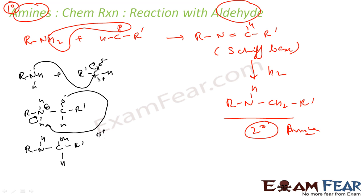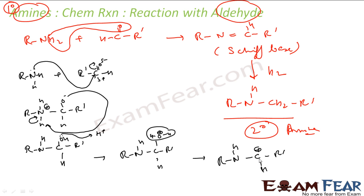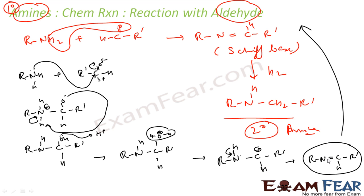The H+ will come and attack the oxygen, giving C-OH with R'. Again there will be H+ that attacks this oxygen and it becomes H3O+, which is too heavy, so this H2O will go off. Carbon gets a positive charge; since hydrogen leaving would give carbon only two bonds, instead nitrogen loses a hydrogen — nitrogen gets a negative charge — and the negative and positive form a double bond. This is the Schiff base. On this you can do hydrogenation: one hydrogen adds to nitrogen and one hydrogen adds to carbon to give the secondary amine.